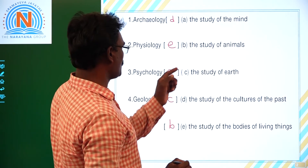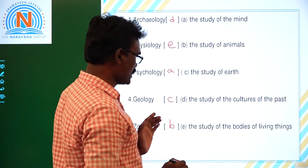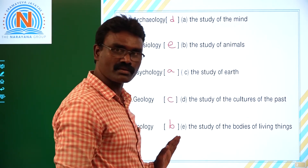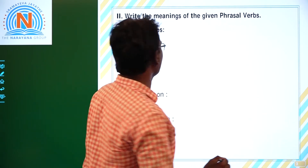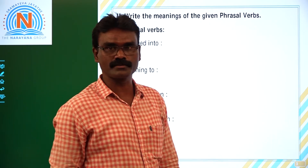So the answers are: D, A, C, B. Right children? Now let us go to phrasal verbs.